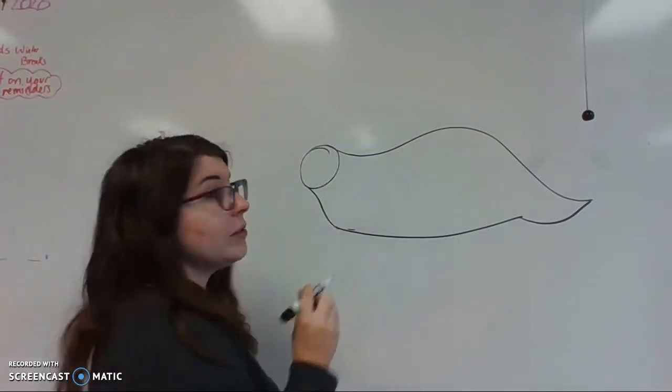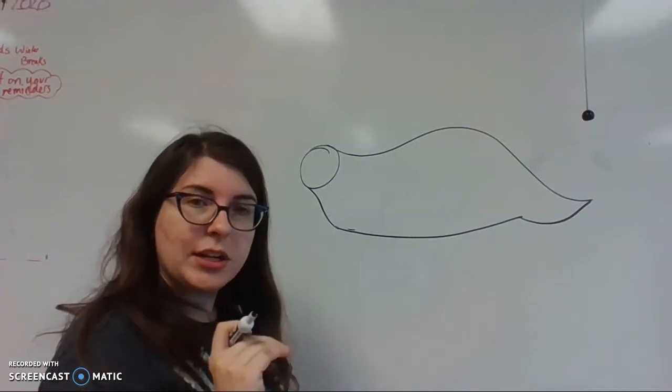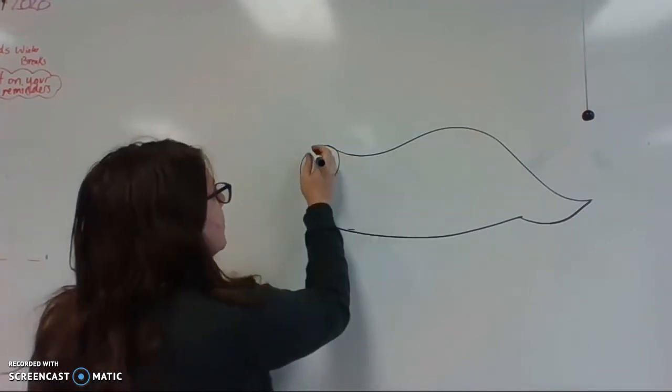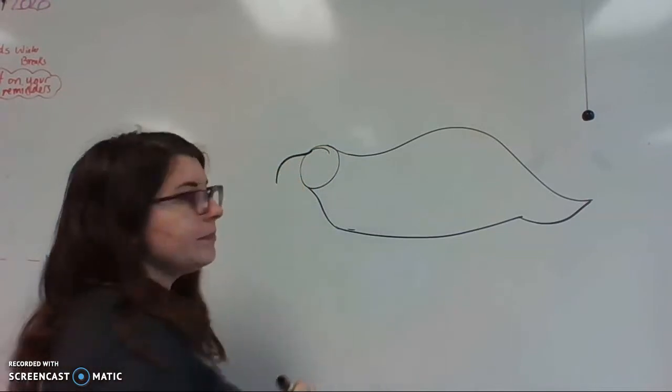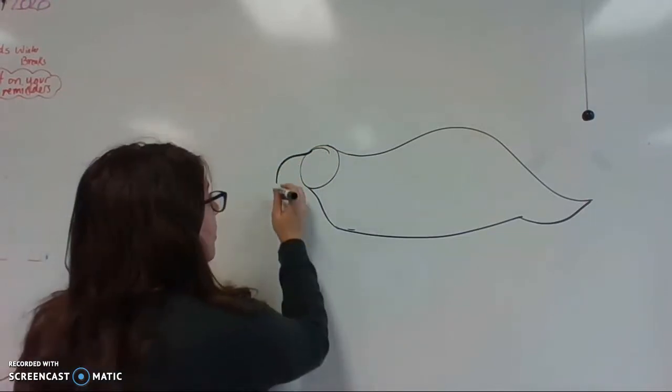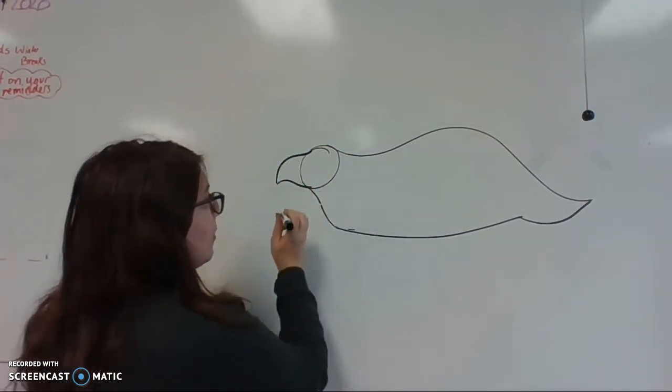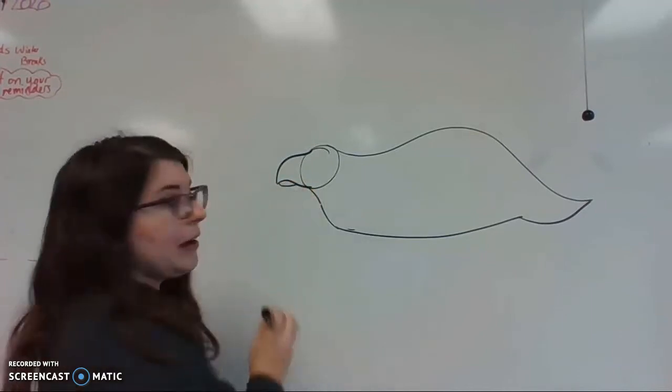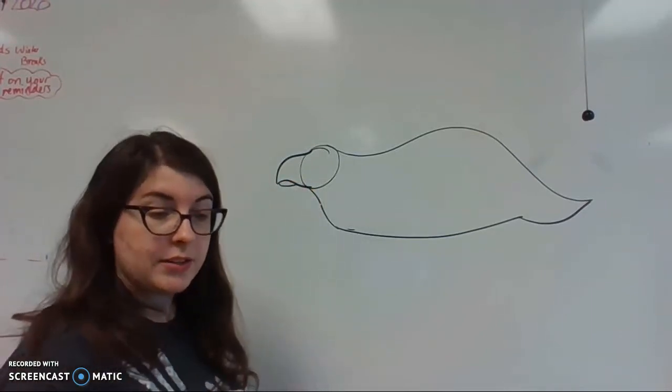So first thing we need to do to change it is give it a beak. Triceratops' mouth is kind of like a bird beak. It comes out and down, and then it curls up and back down. Go ahead and give it an under mouth as well. And you have your Triceratops' mouth.